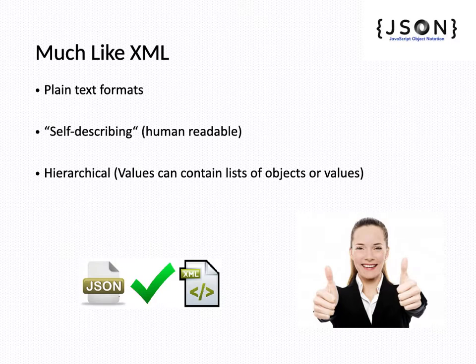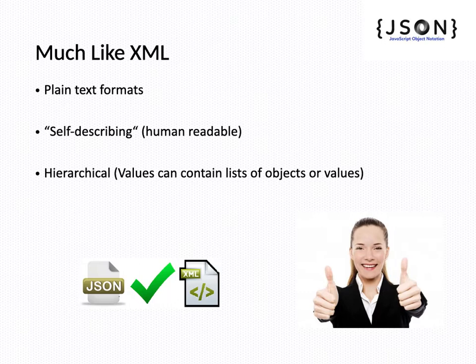JSON is much like XML. XML has a particular hierarchical structure and is in a plain text format. JSON is also in plain text format and is self-describing so that humans can easily understand it. When it has a hierarchical structure, values can contain a list of objects or other values — a property is associated with a value. So it is self-describing, and we can get the meaning of each attribute and its value from the JSON object definition itself.